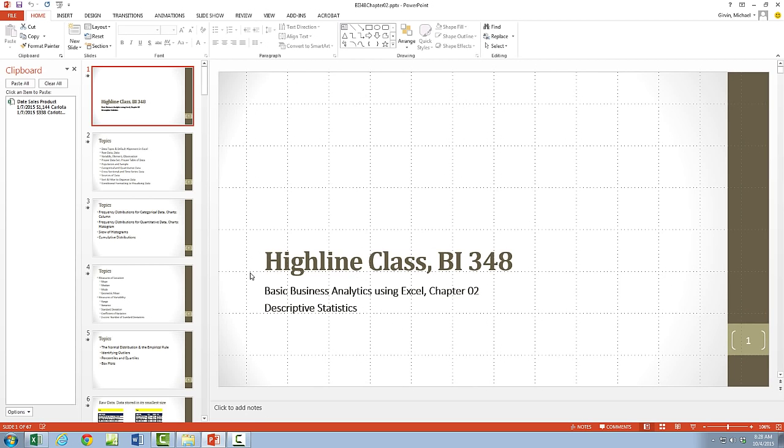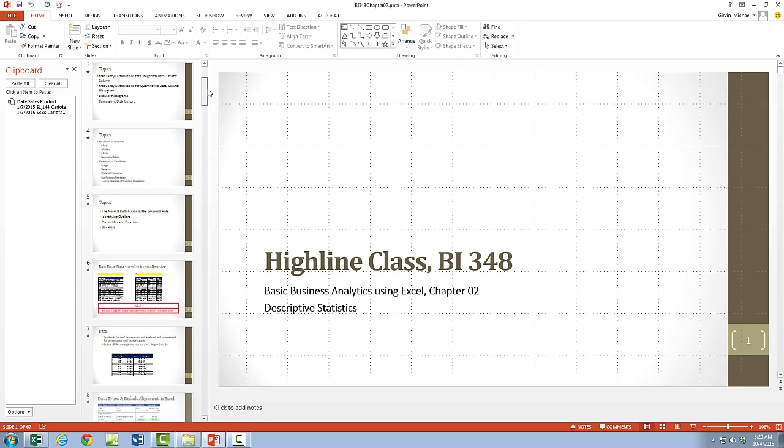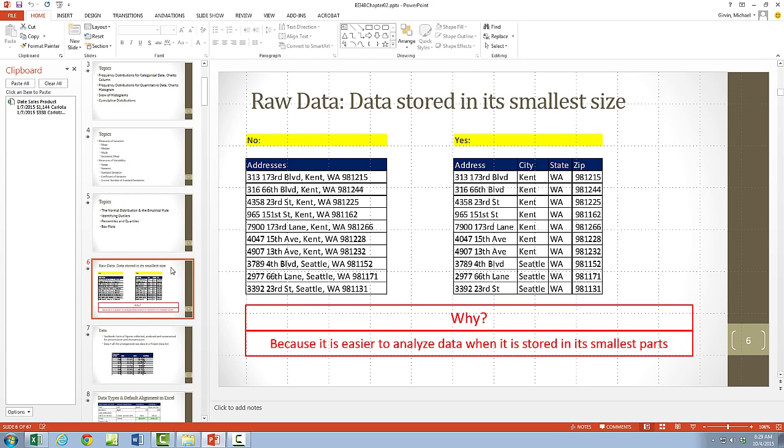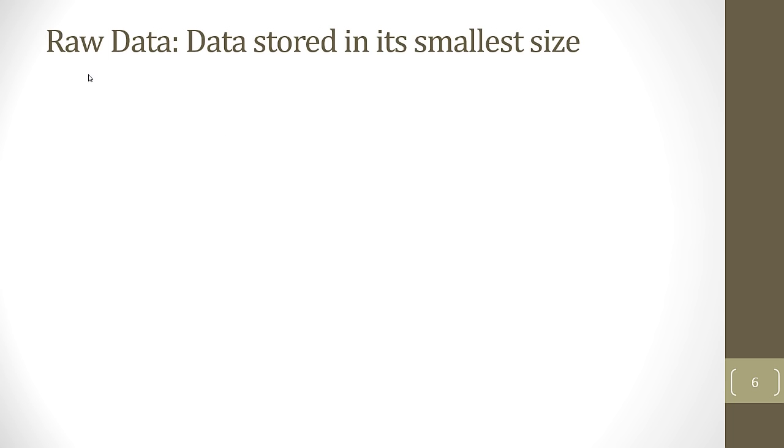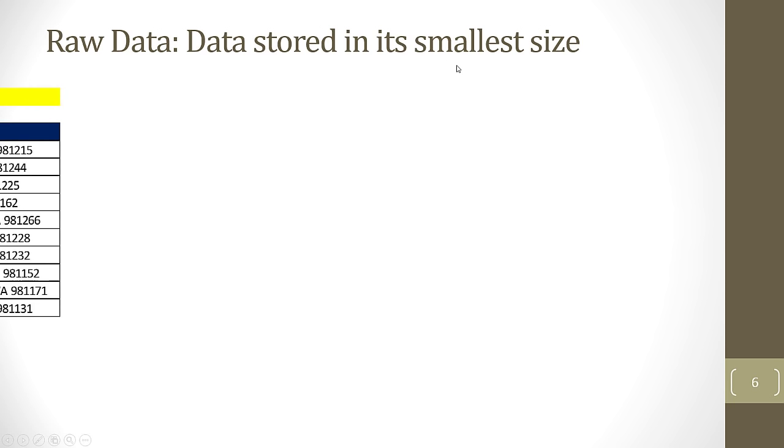We're in Chapter 2, and in this chapter we want to talk about descriptive statistics. Before we can actually start learning how to chart and do numerical measures, we want to talk about data. I'm going to go to slide number six. We want to define right from the beginning what is raw data. It is simply data stored in its smallest size.